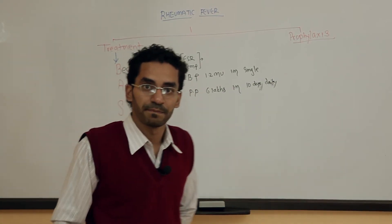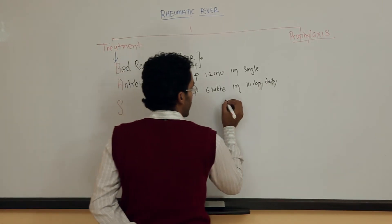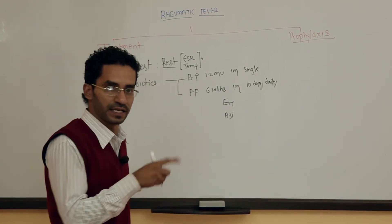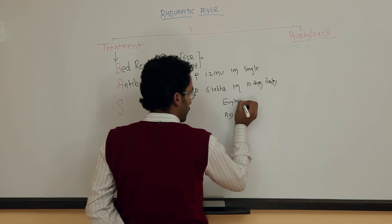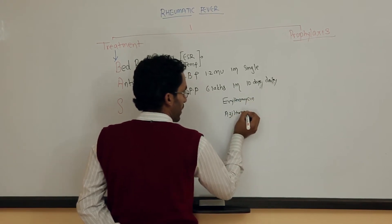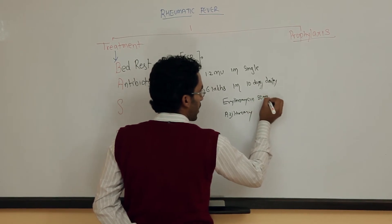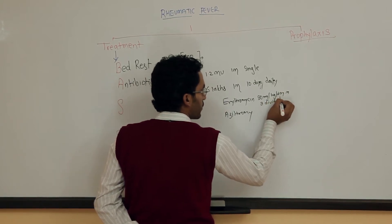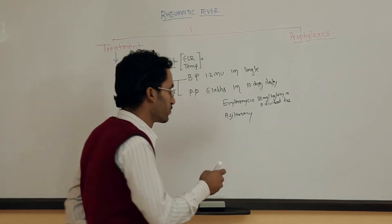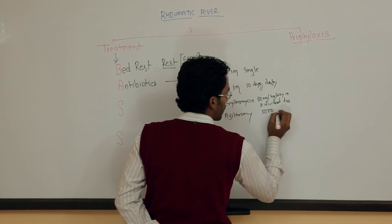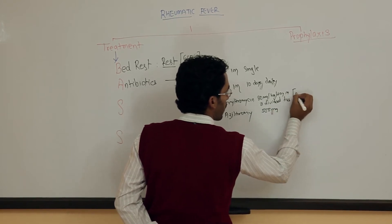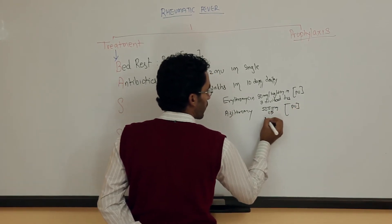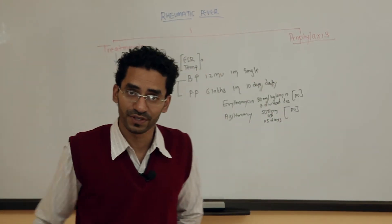If someone is allergic to benzathine penicillin and procaine penicillin, we can go for erythromycin or azithromycin. Erythromycin is 30 milligram per kg per day in 3 divided doses. Azithromycin is 500 milligram per oral, once daily for 5 days. These are the doses of the antibiotics.